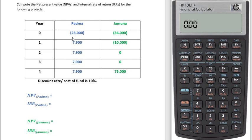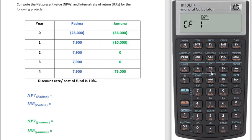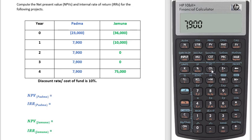Now we have to put all the cash flows. 23,000 — here you can see that 23,000 is in brackets, which means it is a negative cash flow, so we have to put a negative sign. Do not press the negative sign button; press the plus/minus button. Then CF, check. This is cash flow: 2,000. CF, check: 7,900. So this is cash flow 4.